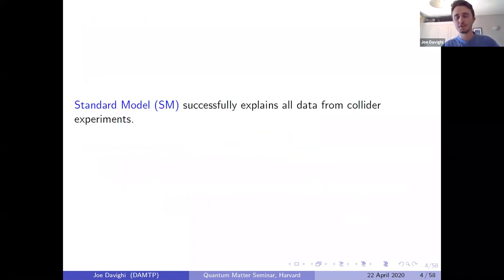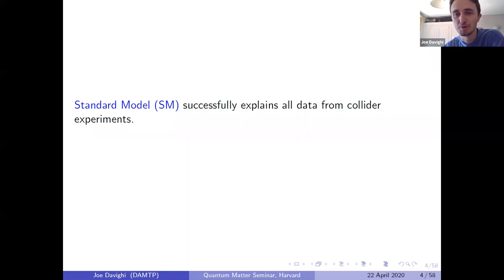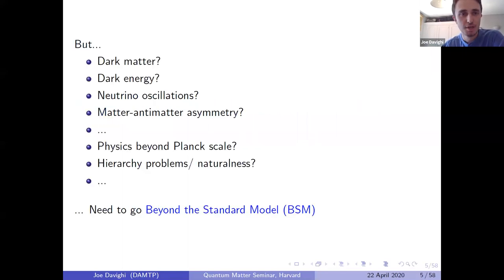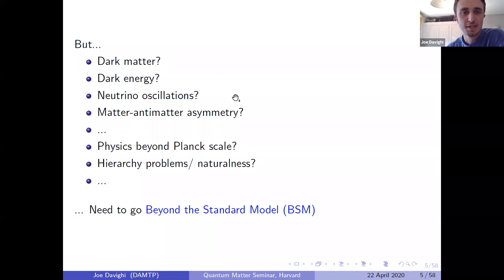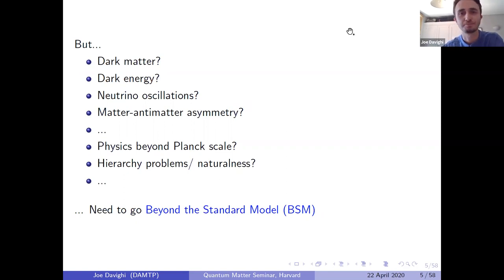The standard model of particle physics successfully explains more or less all data from collider experiments. However, there are things it doesn't explain beyond collider physics. Various observational facts, mostly from cosmology: there's no particle physics understanding of dark matter, similarly for dark energy. Neutrino masses in the standard model — it's not known exactly which mechanism is responsible for neutrino masses and therefore neutrino oscillations — and also how to produce the observed matter-antimatter asymmetry in the universe.